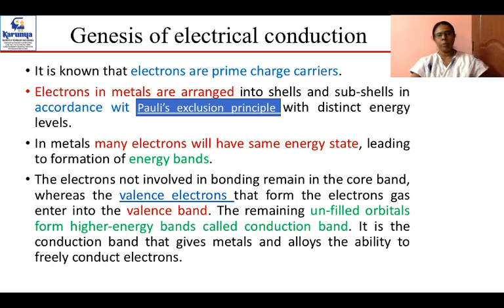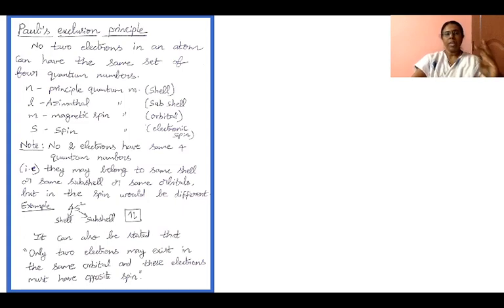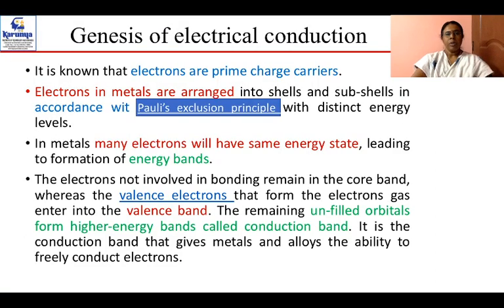Pauli's exclusion principle states that no two electrons in an atom can have the same set of four quantum numbers: principal, azimuthal, magnetic, and spin. Based on this, only two electrons may exist in the same orbital, and these two electrons must have opposite spin — they may share the same principal and azimuthal quantum numbers but must have different electronic spin.